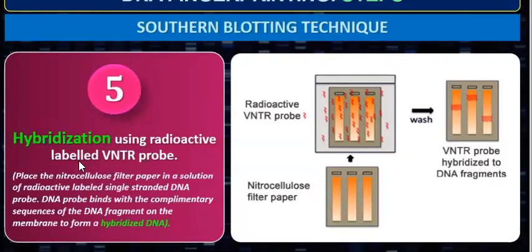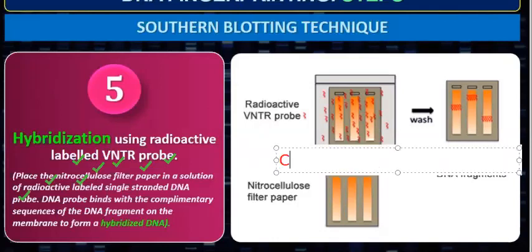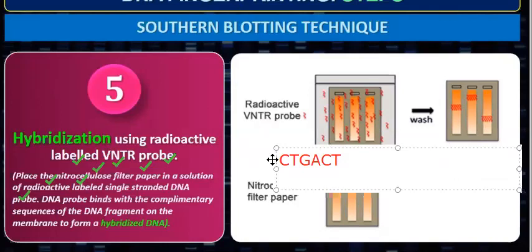Next is hybridization using a radioactive labeled VNTR probe. We have a VNTR probe — Variable Number Tandem Repeats. We place the nitrocellulose filter paper in a solution containing the radioactive labeled single-stranded DNA probe. This probe is of complementary nature. For example, if my probe is C-T-G-A-C-T, it will hybridize with the complementary sequence G-A-C-T-G-A wherever that sequence exists in the DNA.